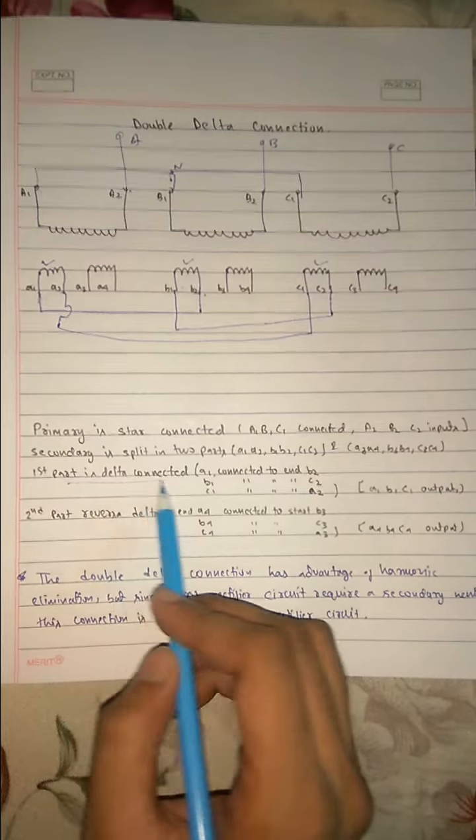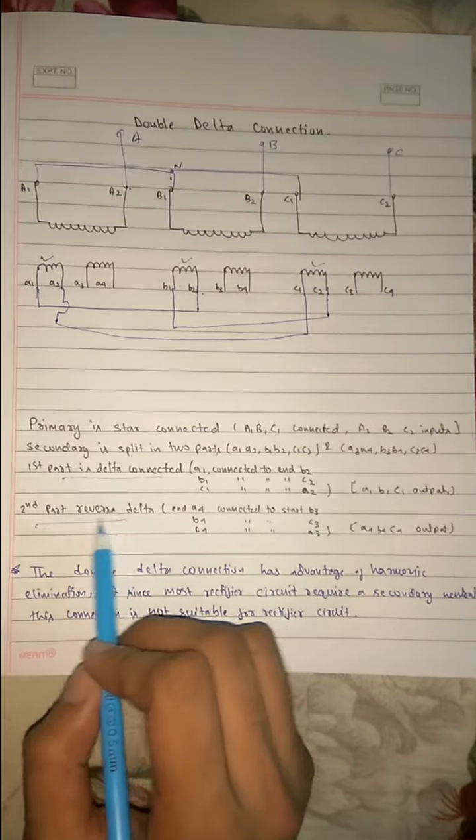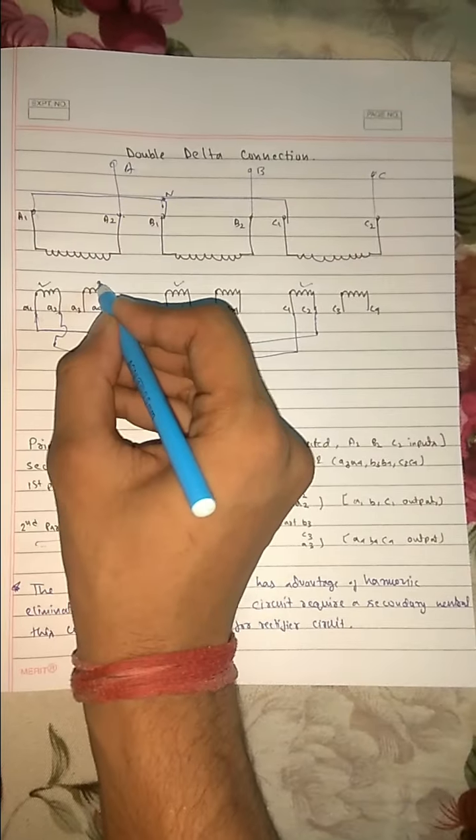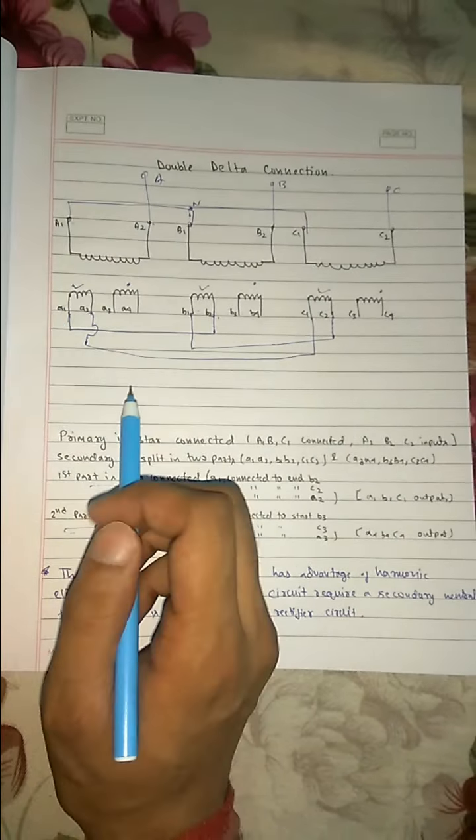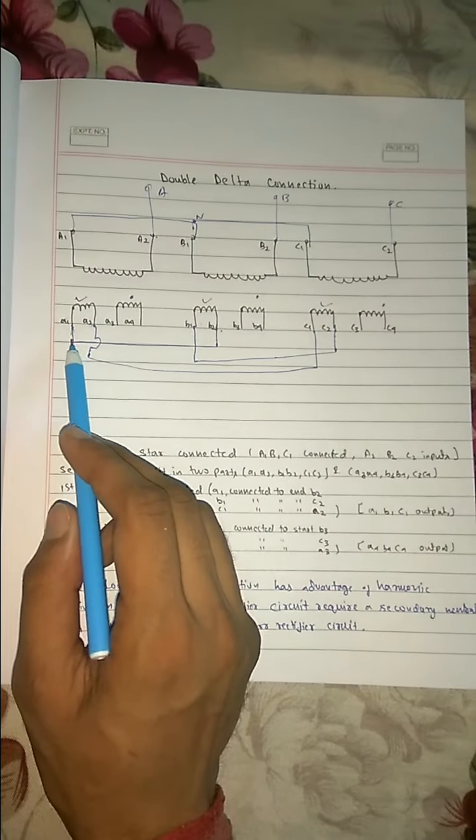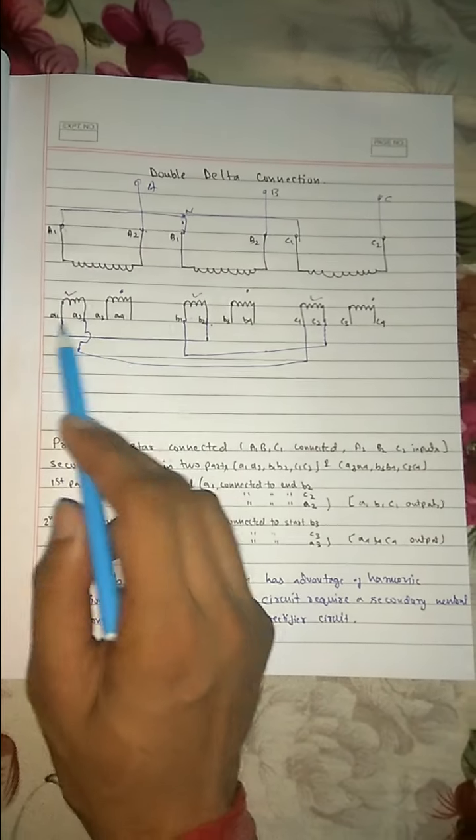So our first part is connected. Now the second part. This, this, this and this, they are reverse delta connected. First was delta connected.